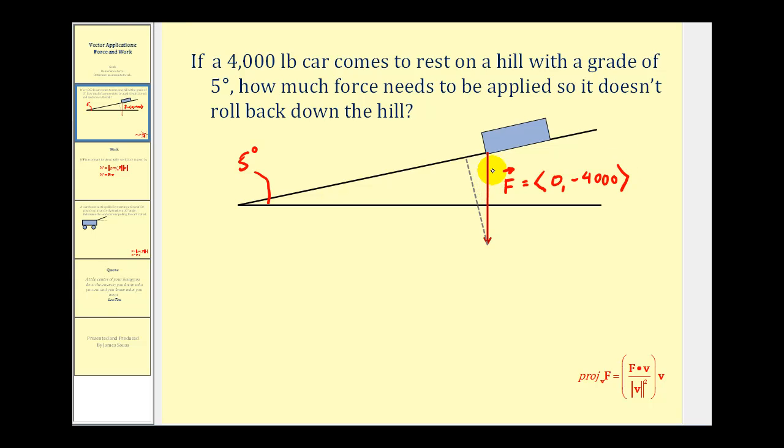Now in relation to the ramp, this force vector has two components. One component that's parallel to the ramp, another component that is perpendicular to the ramp. So the amount of force needed to be applied so it doesn't roll back down the hill would have to be the force that counteracts this force here. Well if we take a look at this, if we project the force vector onto the ramp, that would give us the amount of force that's pushing it down the ramp, and therefore the amount of force we need in order to stop it from rolling backwards.